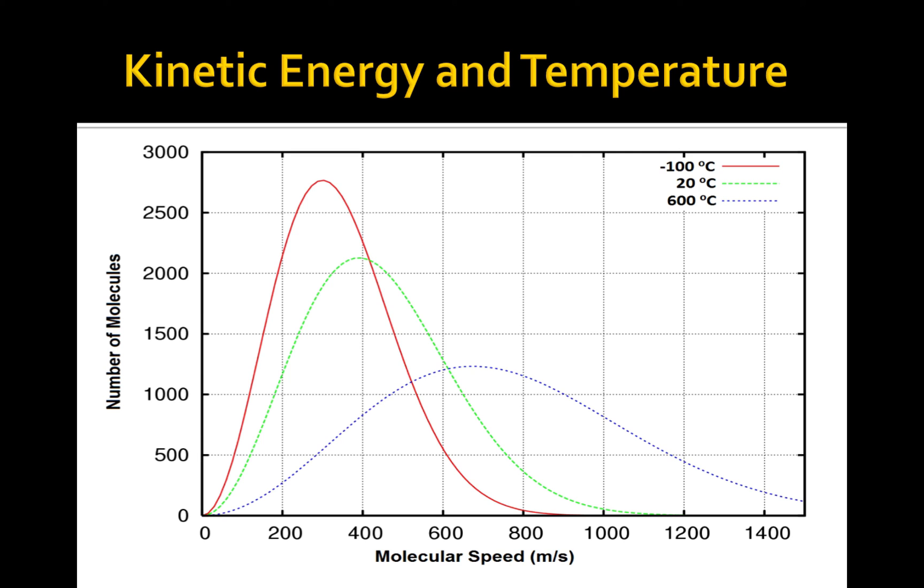This diagram is similar to the one you saw in your textbook. It shows that as temperature increases, which is represented by the blue dotted line, the average molecular speed increases.